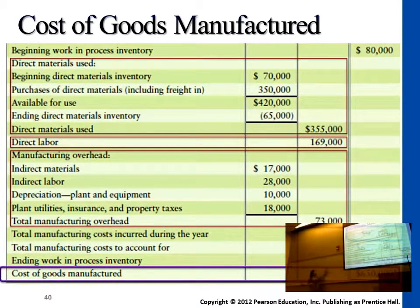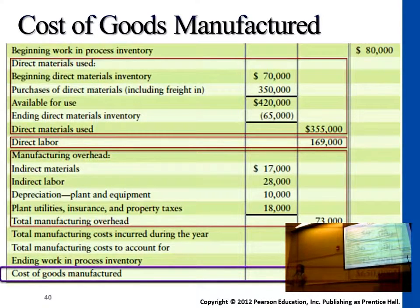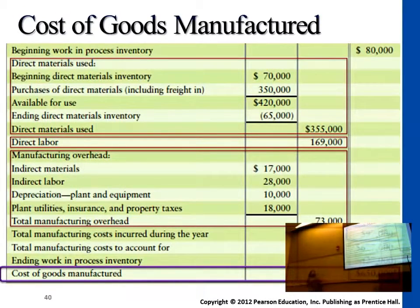These are the newly incurred costs. But what about the leftover from the beginning? We may have already manufactured goods last year, but when we reach December 31st, some products may be only halfway done. Those are called beginning work-in-process inventory. We have $80,000 worth of inventory that is not yet finished goods, so we still need to consider them, since this year we may have completed those products.